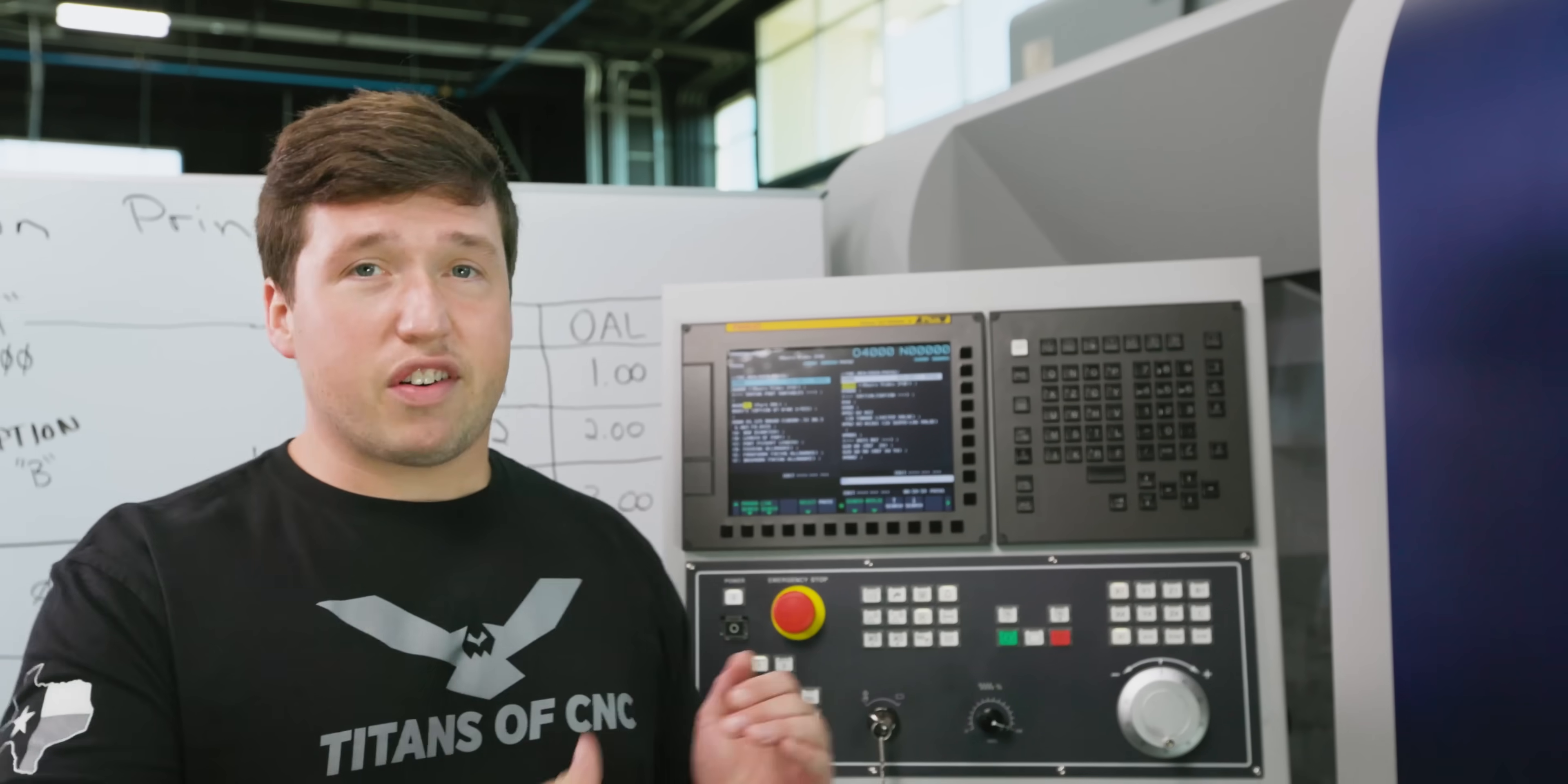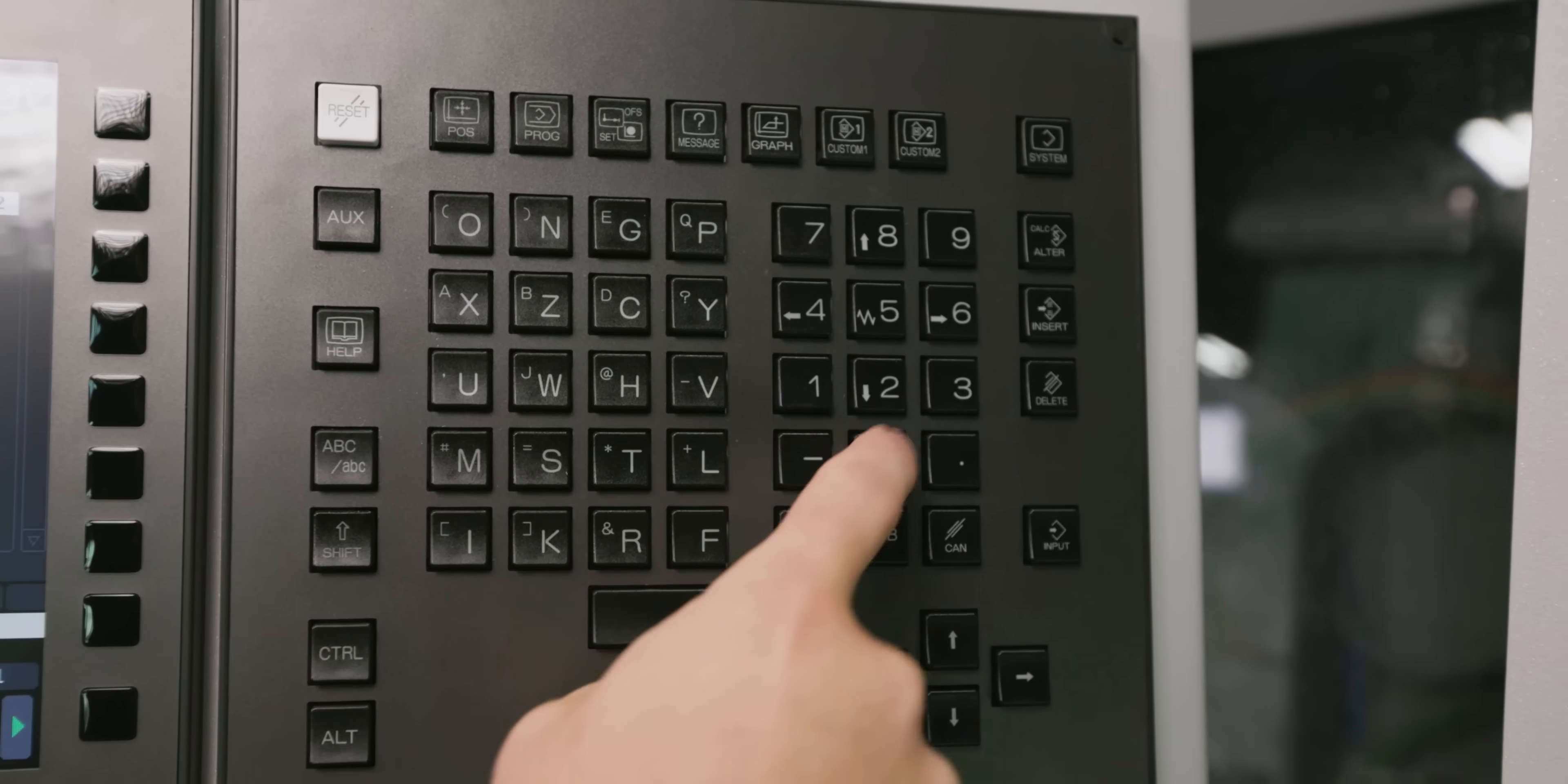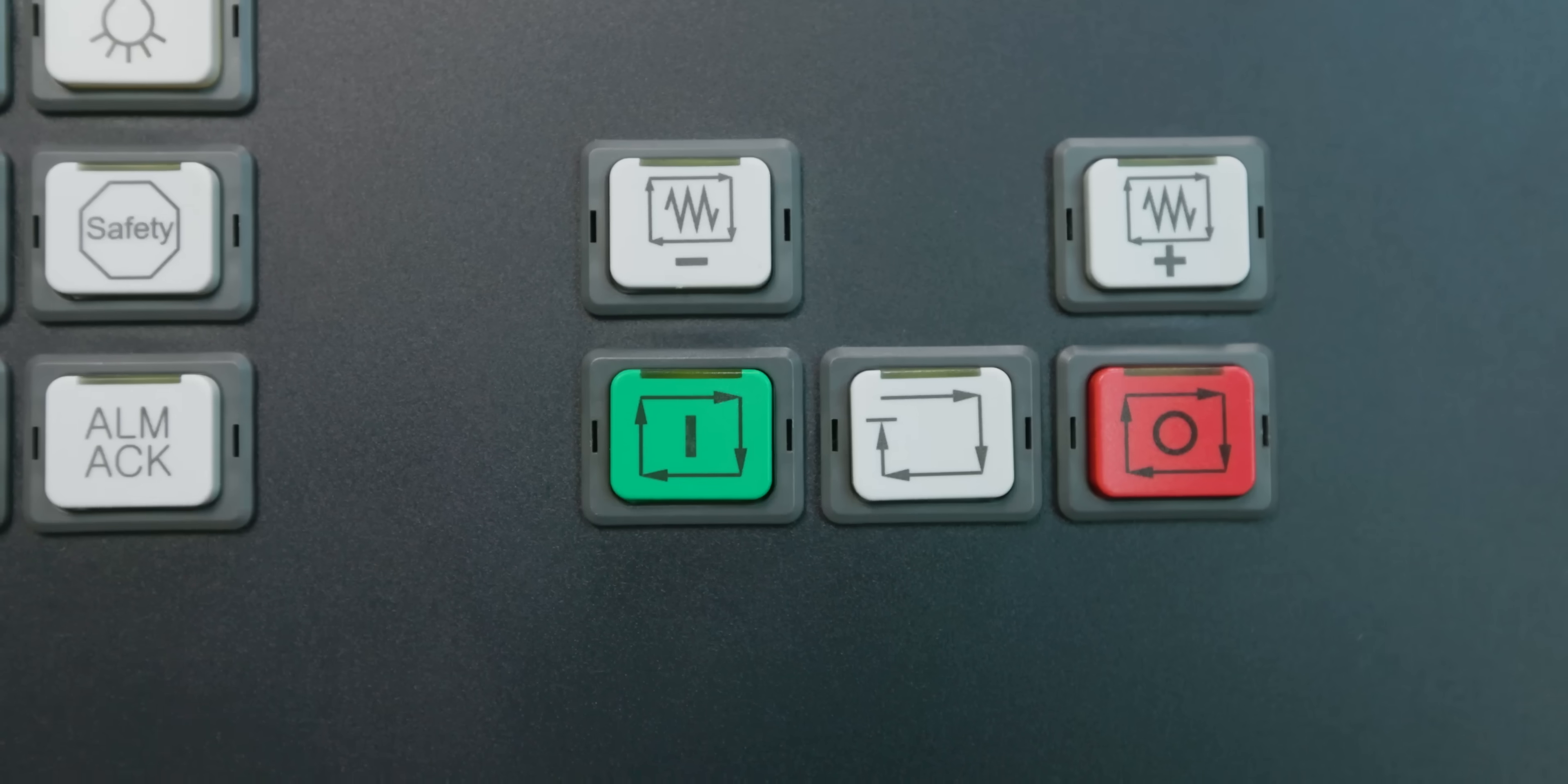Just to show you how easy this is, we're going to run every single one of these parts really quickly. I'm going to show you how little it takes to change your program and why macros make this really easy to do. First one up is the one inch, so let's run that. Memory, cycle start. We got the one inch done. Now let's make a two inch one. Down, shift, equals, two inches, alter, reset, memory, cycle start. Now we have our two inch and our one inch. Let's make a three inch one.